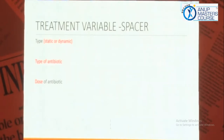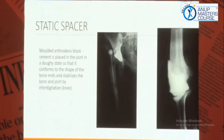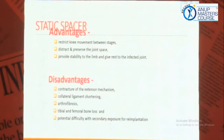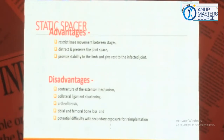Treatment variables include type of antibiotic, type of spacer, and dose of antibiotic. These are some examples of static spacers, where we just put in cement and don't worry about movement. The advantages are that you can create it on the table, unlike the Prostalac mobile cement spacer, which is costly. The disadvantages are: contracture of the extensor mechanism, collateral ligament shortening, arthrofibrosis, tibial and femoral defect, bone loss, and potential difficulty in secondary exposure. Sometimes even the static spacer dislodges.